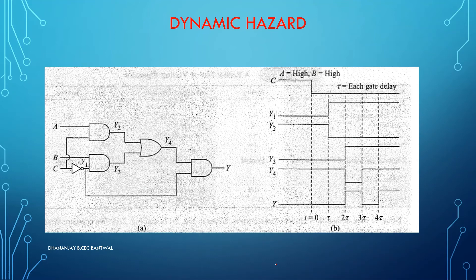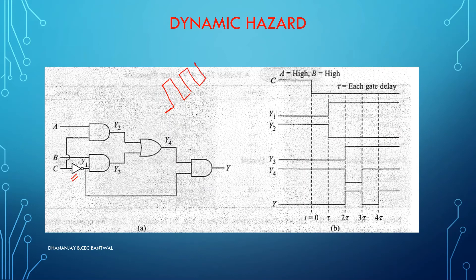Moving to the last part: dynamic hazard. This also occurs due to time delay. There is a NOT gate here. The problem with this circuit is: you are expecting your output to be 0, but instead of remaining 0 it will become 1 for some time, then again become 0, again become 1, again become 0. This condition continues. The output changes continuously due to propagation delay of a component — this is called dynamic hazard.